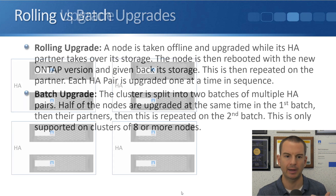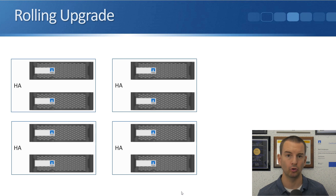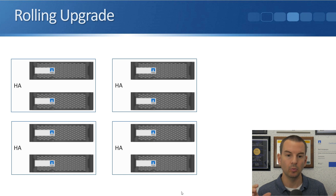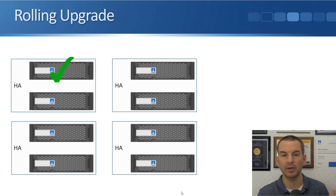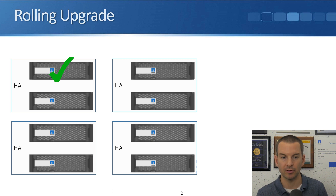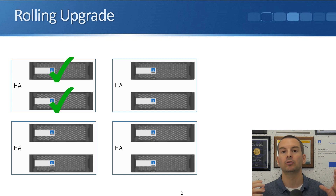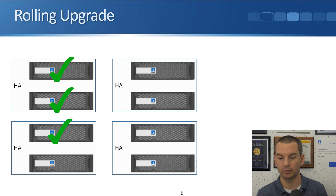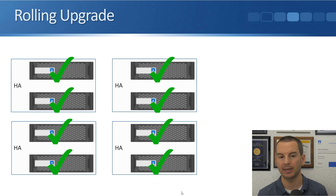Let's look at that with a diagram. With a rolling upgrade — one at a time — in an eight-node cluster made up of four HA pairs: we upgrade node one, and while that is happening node two, its HA partner, takes control of its storage. When node one is done, then node two gets upgraded, and node one takes care of its storage. When node two is completed, nodes one and two are back to normal. We then do that on nodes three, four, five, six, seven, and eight — rolling upgrade one at a time.